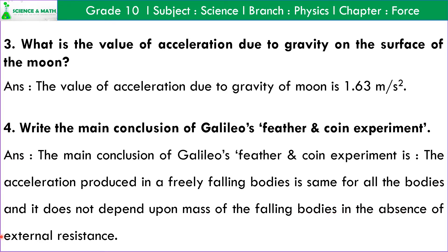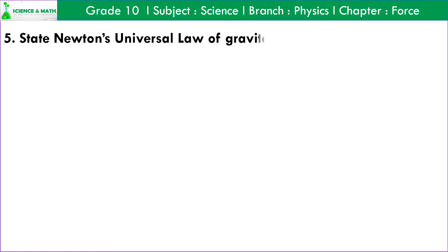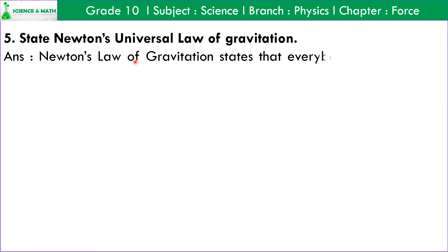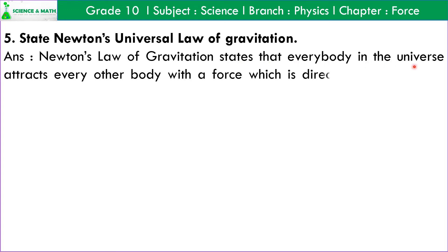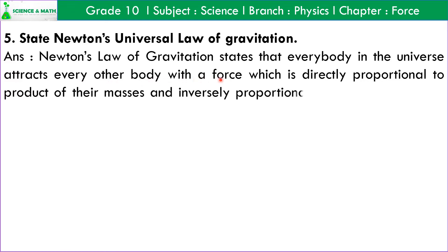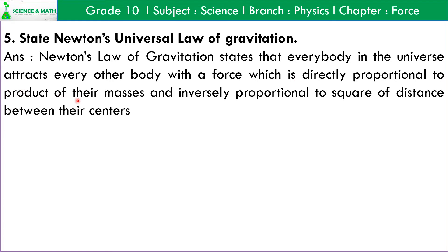Question number 5: State Newton's universal law of gravitation. Answer: Newton's law of gravitation states that every body in the universe attracts every other body with a force which is directly proportional to the product of their masses and inversely proportional to the square of the distance between their centers.